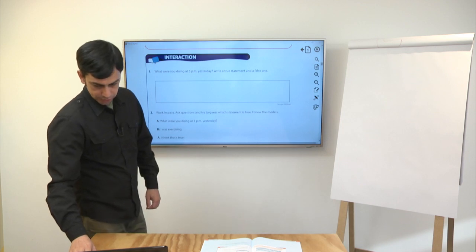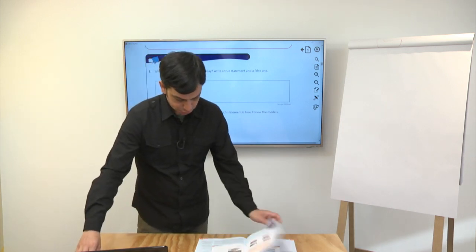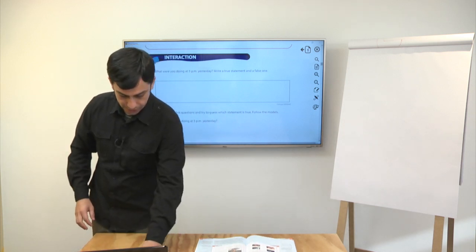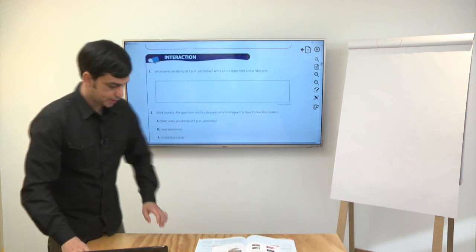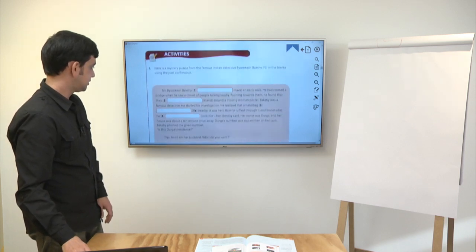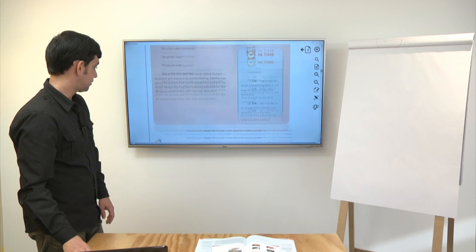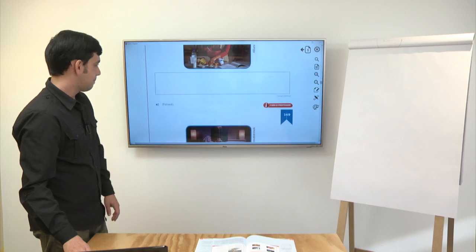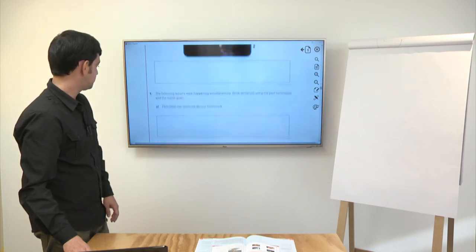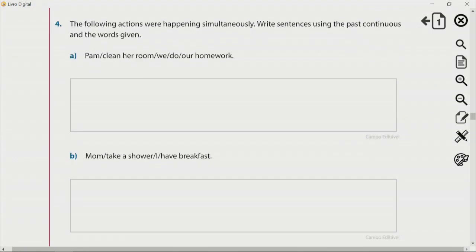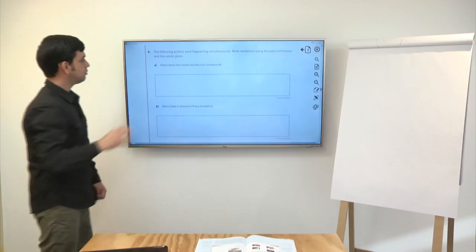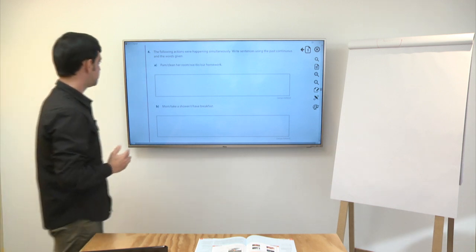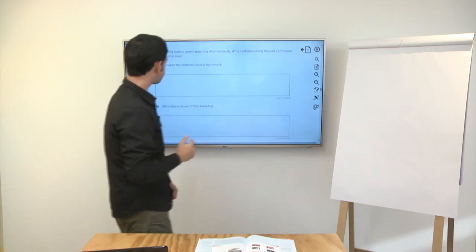Ok, so, I would like you to take a look at page 349. Lá na página 349, vocês vão fazer o seguinte exercício. O exercise number four. Where is it? Exercise number four, page 349. And this is the one. The following actions were happening simultaneously. Write sentences using the past continuous and the words given. As ações estavam acontecendo simultaneamente. Então, vocês vão usar o past continuous para dizer que isso estava acontecendo.